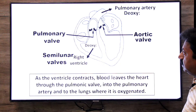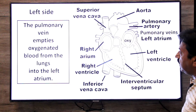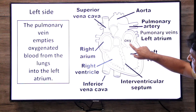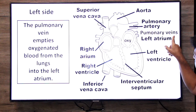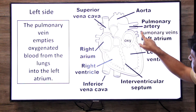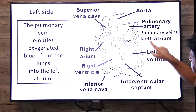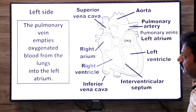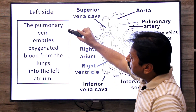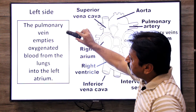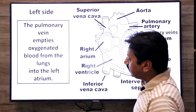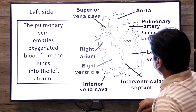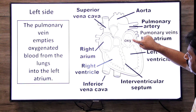Now we move to the left side. Once the blood has gone to the lungs for oxygenation, the pulmonary veins return the oxygenated blood to the left atrium. The pulmonary veins empty oxygenated blood from the lungs into the left atrium.